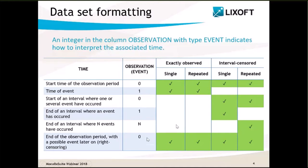A right censoring information can be added in the dataset in association with any type of event, and the last time for an individual associated with a value zero represents the end of the observation period. This takes into account the fact that an event may still happen after that time. In the case of a single event, this row is only informative if no event has occurred before that time.